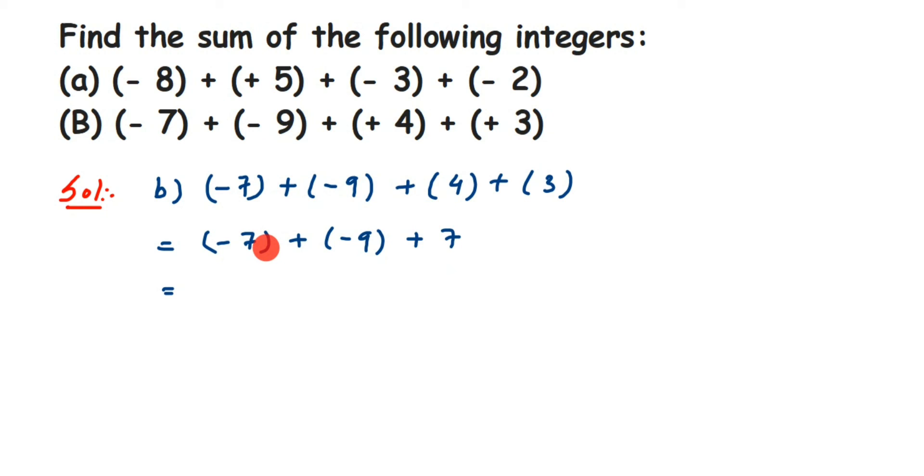You can directly cancel them, or you can rearrange the numbers like (-7) + 7, then plus (-9). You can avoid this step and directly write down 0. So (-7) + 7 cancel out each other, we'll get 0. So 0 + (-9) will be (-9).